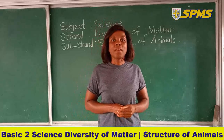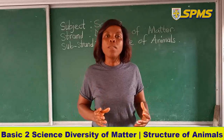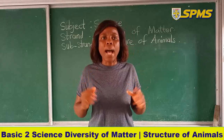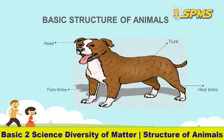Now, what are the various parts that form the structure of an animal? Look at the animal on your screen very carefully. What animal is that? It's a dog — a very nice dog. Now let's look at the basic structure of this dog. Look at the first arrow — where is it pointing? The head. The head forms one part of the structure. Look at the right-hand side — it's pointing to the middle part of the animal. And how are we going to call it? The trunk. That is the trunk of the animal.